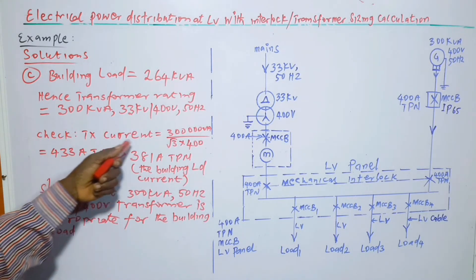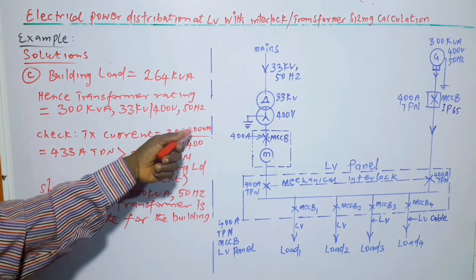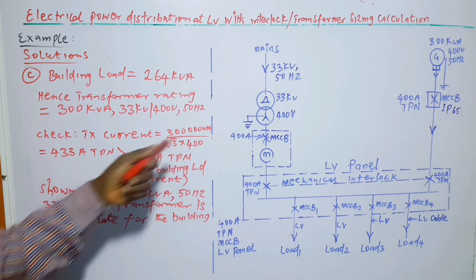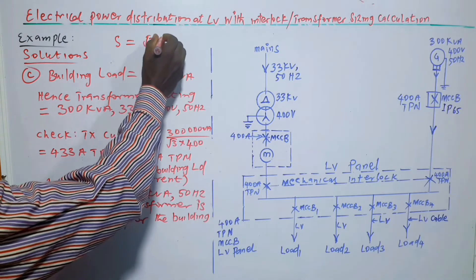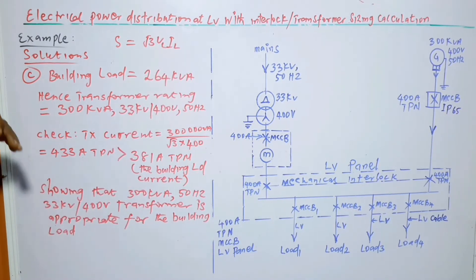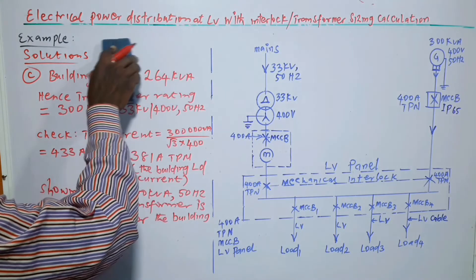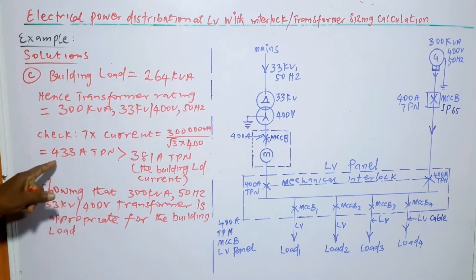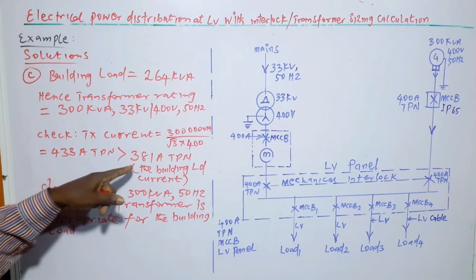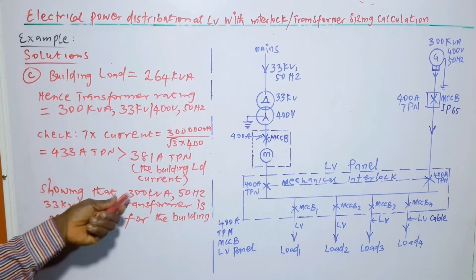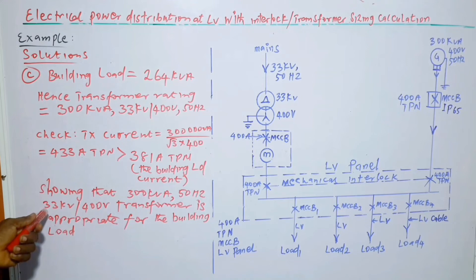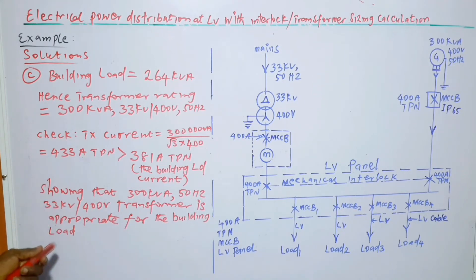Then we can check what the transformer current is: 300 kVA or 300,000 VA divided by root 3 times 400. From the apparent power formula, S is equal to root 3 V line I line. So from there we can calculate the current. If it is correctly calculated, the answer is 433 ampere three-phase with neutral, which is greater than the load current calculated in part B. And that is showing that 300 kVA at 50 Hz with 33 kV on the primary side and 400 volts on the secondary side transformer is appropriate for the building load. And that is the answer to part C.